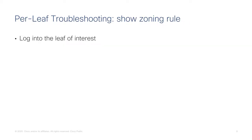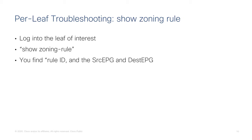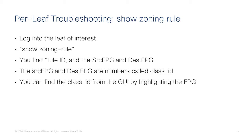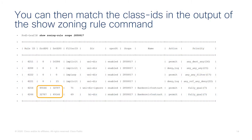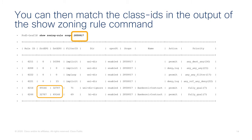The classic command used for the longest time is show zoning rule. It requires going into the leaf of interest, entering show zoning rule, and finding the rule ID. The source and destination EPGs can be found by checking the class ID numbers. Before issuing this command, you would go to the UI, look at the EPG names, and find the class ID numbers. With these numbers, you can look at the policy cam programming using show zoning rule, scoping the output to the VRF you are looking at.